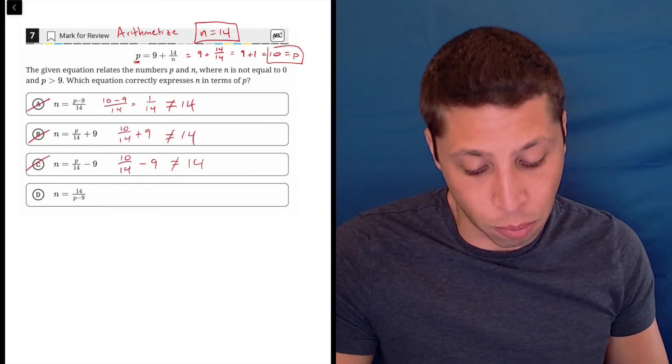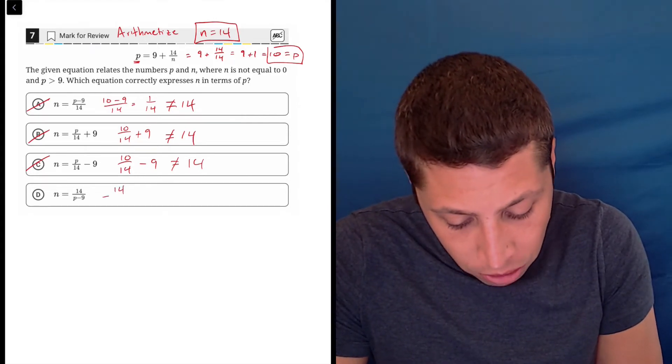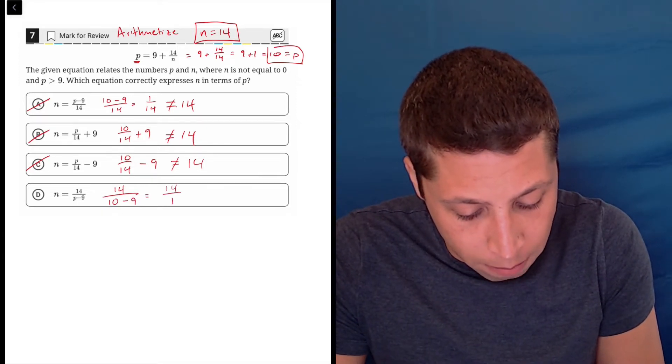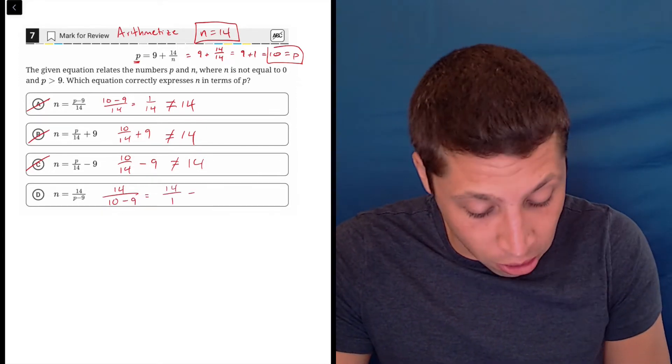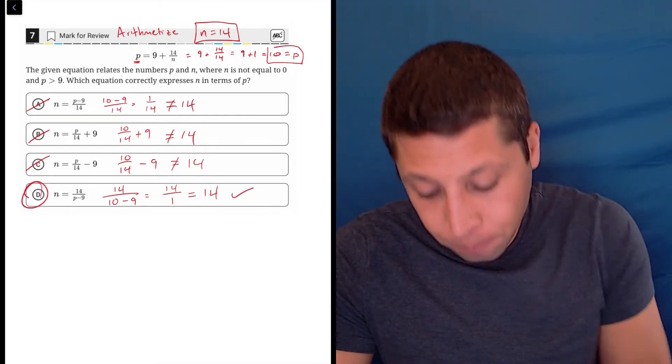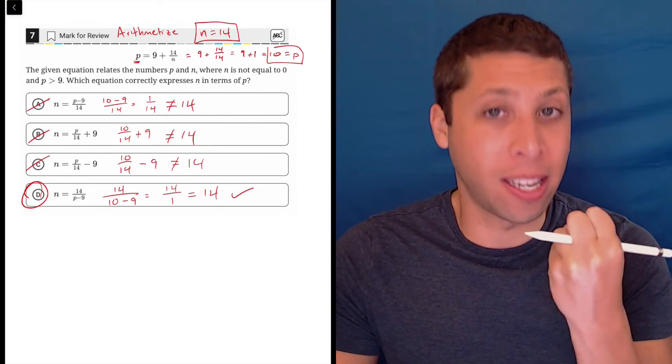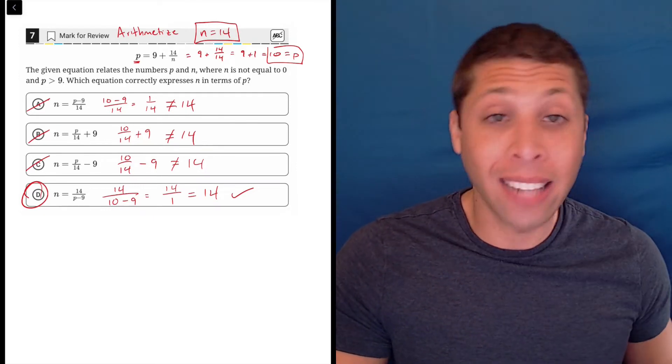So, let's hope that choice D gives us what we want. That would be 14 over 10 minus 9. Well, 10 minus 9 is 1, and 14 over 1 is 14. So, only choice D fit the numbers that I expected to fit. That's how Arithmetize works.